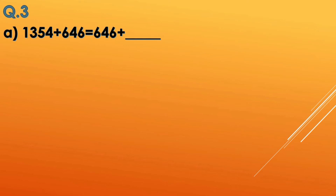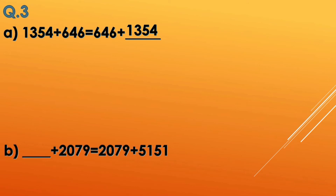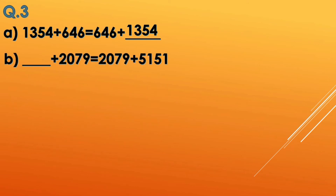Coming to question 3 — properties are indicated and we need to fill in the blanks. In option a, 1354 plus 646 equals 646 plus blank. Since they are changing the order, this is commutative property, so the answer is 1354. In option b, again they are changing the order, so the appropriate answer to fill in is 5151.